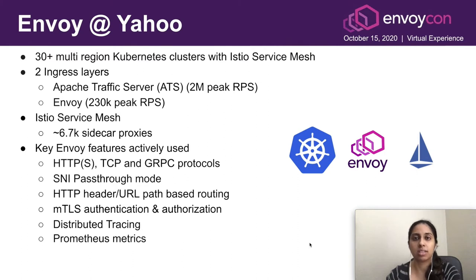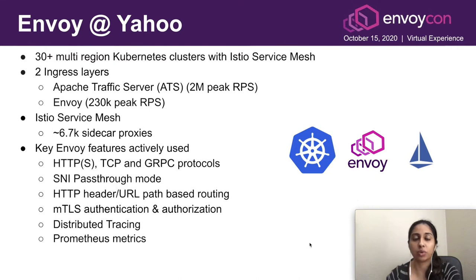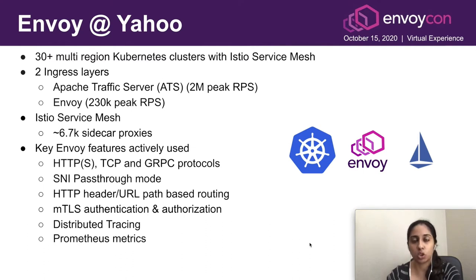Our Istio service mesh is running at a scale of 6,700 application pods, all bundled with the Envoy sidecar proxy. Key features of Envoy we utilize include multiple protocol support such as HTTP, HTTPS, gRPC, and TCP including SNI pass-through mode. We allow users to take advantage of HTTP request manipulation options. For security, a majority of our applications delegate mutual TLS authentication and authorization to the Envoy sidecar proxy. For observability, we use tracing attributes and Prometheus metrics generated by Envoy.